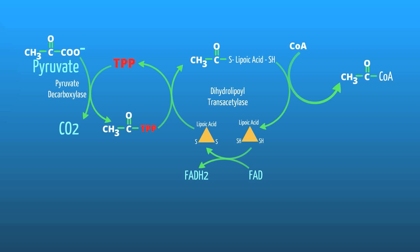The newly formed molecule with TPP undergoes a replacement reaction where the TPP is replaced with lipoic acid sulfhydryl groups. With the lipoic acid group attached, dihydrolipoyl transacetylase removes this lipoic acid group and adds coenzyme A to the acetyl group, creating acetyl-CoA. Acetyl-CoA then enters the Krebs cycle. The lipoic acid group that is removed has to be regenerated by being oxidized by FAD, which pulls the hydrogen groups off, returning it to its previous state.